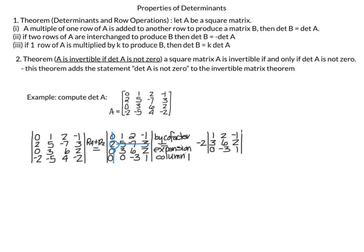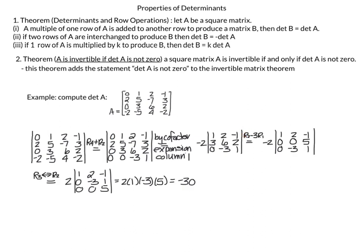Within the 3×3 submatrix, I replace R2 with R2 minus 3R1, giving (0, 0, 5). I then swap R2 and R3 to reach echelon form, which introduces another negative sign, making the coefficient positive 2. The triangular determinant is 2 × 1 × (−3) × 5. The final determinant is −30.